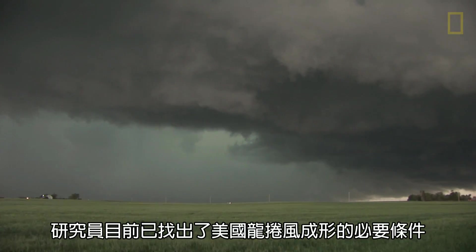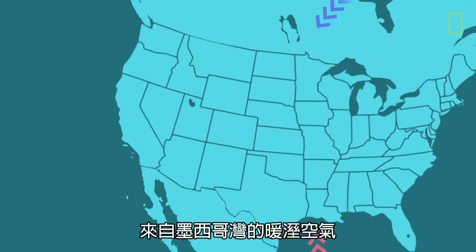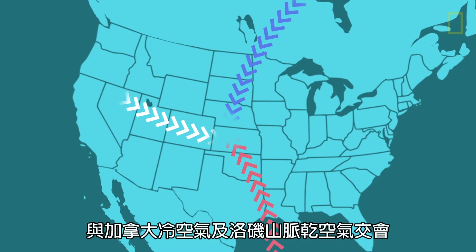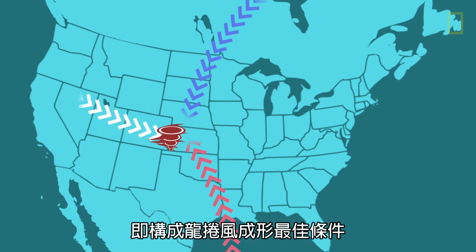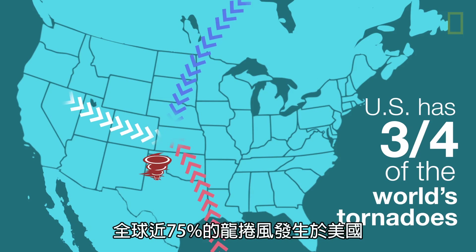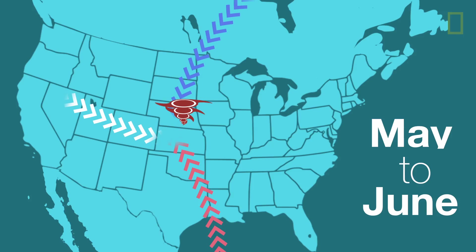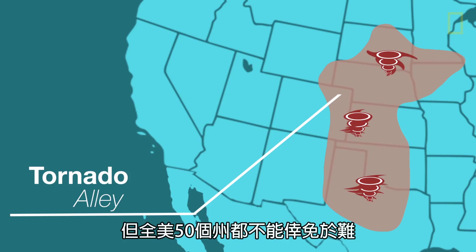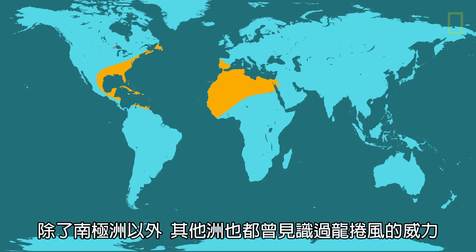Research has allowed us to identify the essential ingredients needed for twisters to form in the US: warm, moist air typically from the Gulf of Mexico, cool air typically from Canada, and dry air typically from the Rockies. When these air masses collide, they create the perfect conditions for a tornado. Nearly three-quarters of the world's tornadoes occur in the United States, and the peak season is between May and June. A majority touch down in Tornado Alley, a section of the central United States, but tornadoes have been recorded in all 50 states and on every continent except Antarctica.